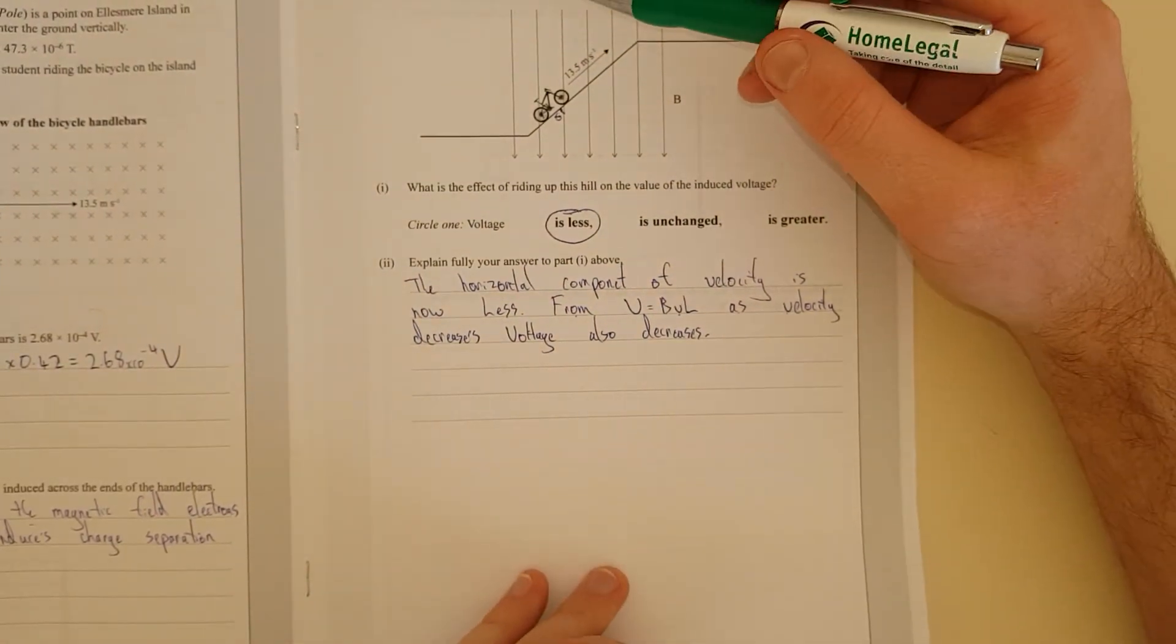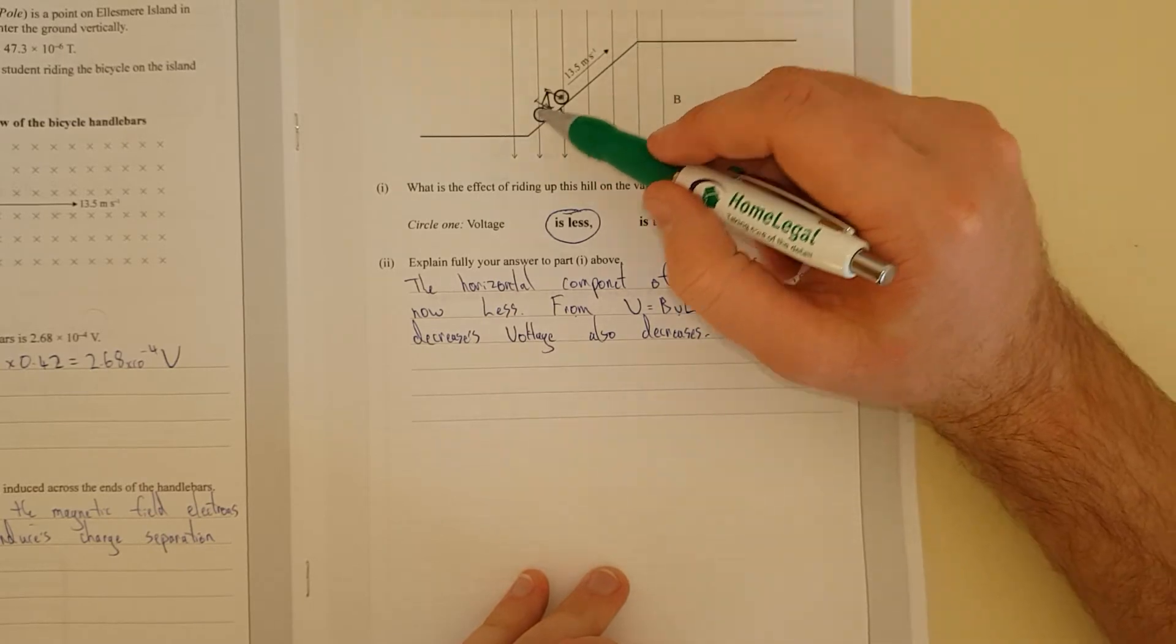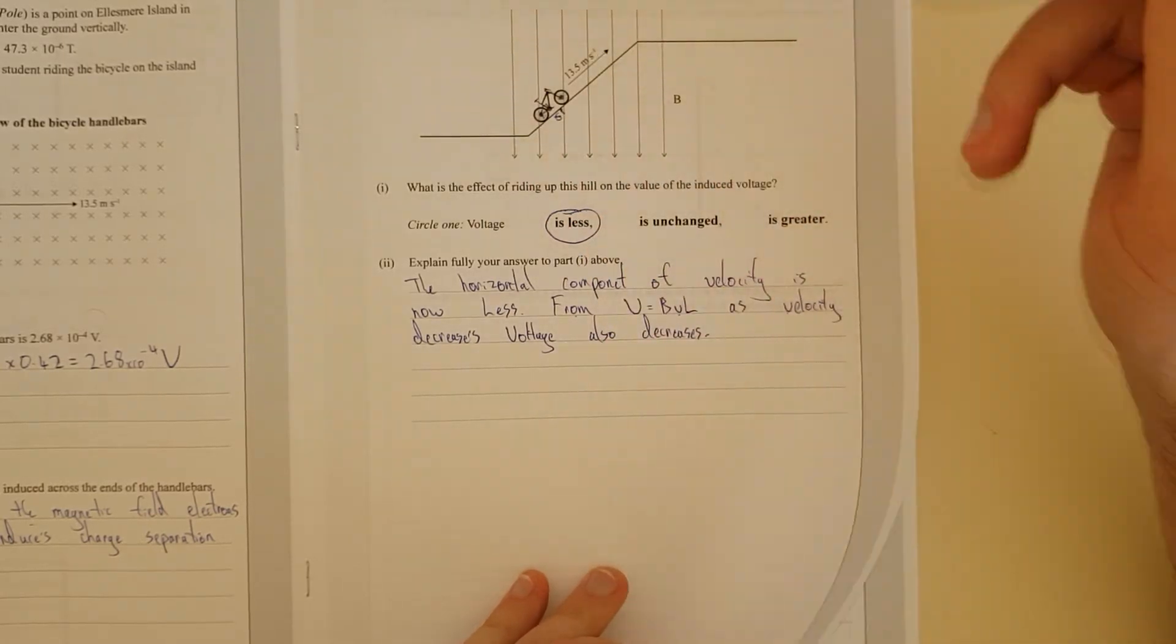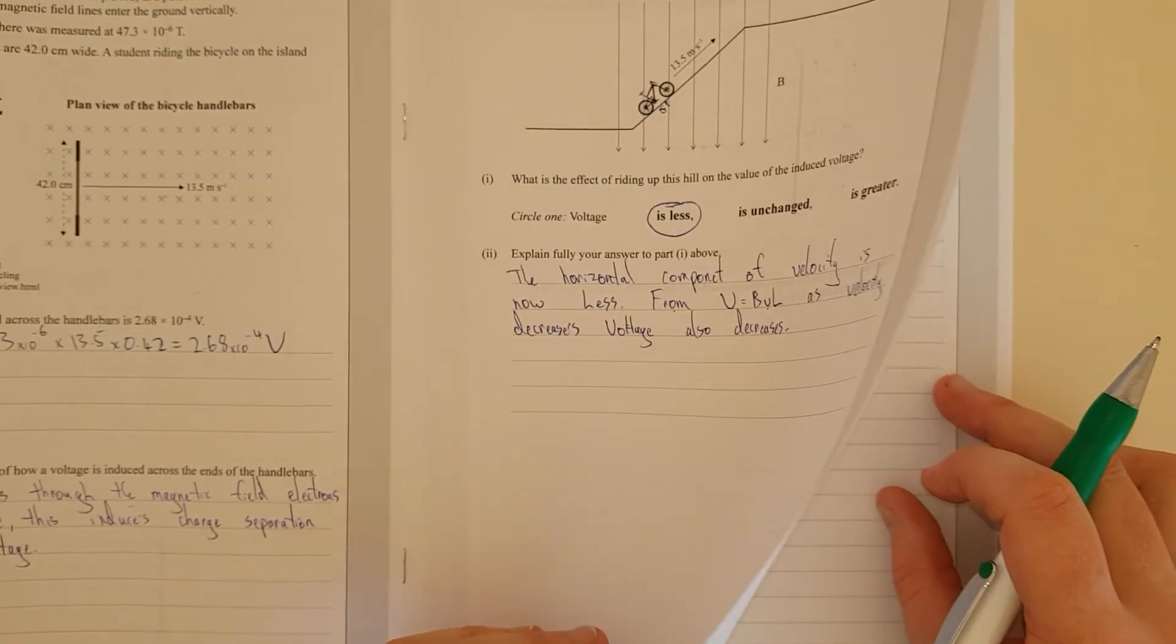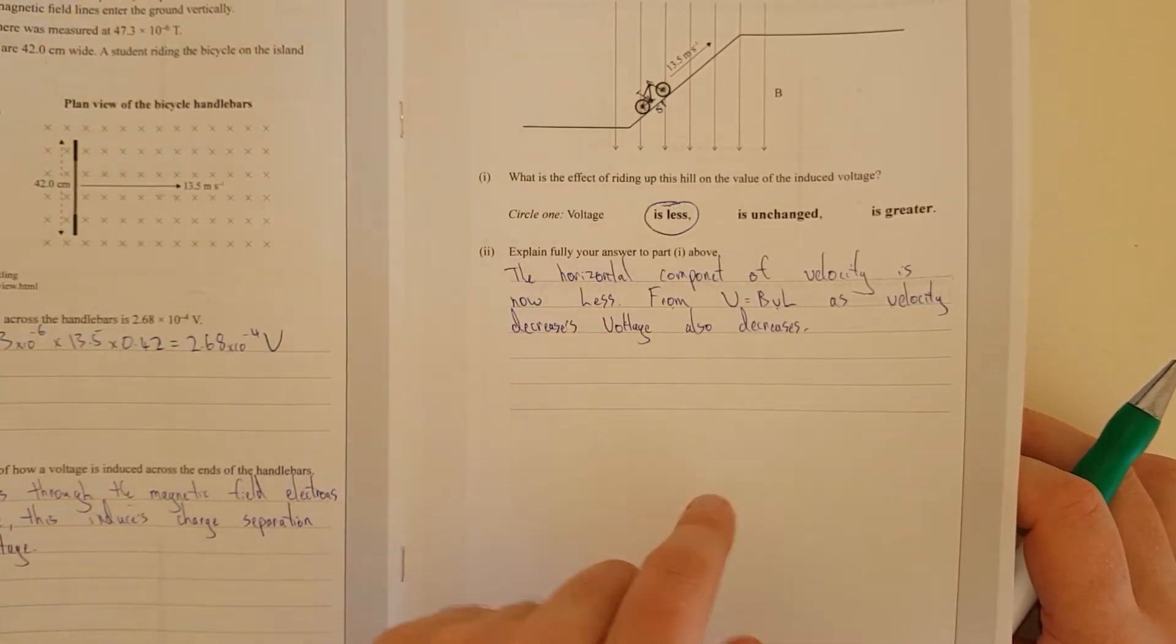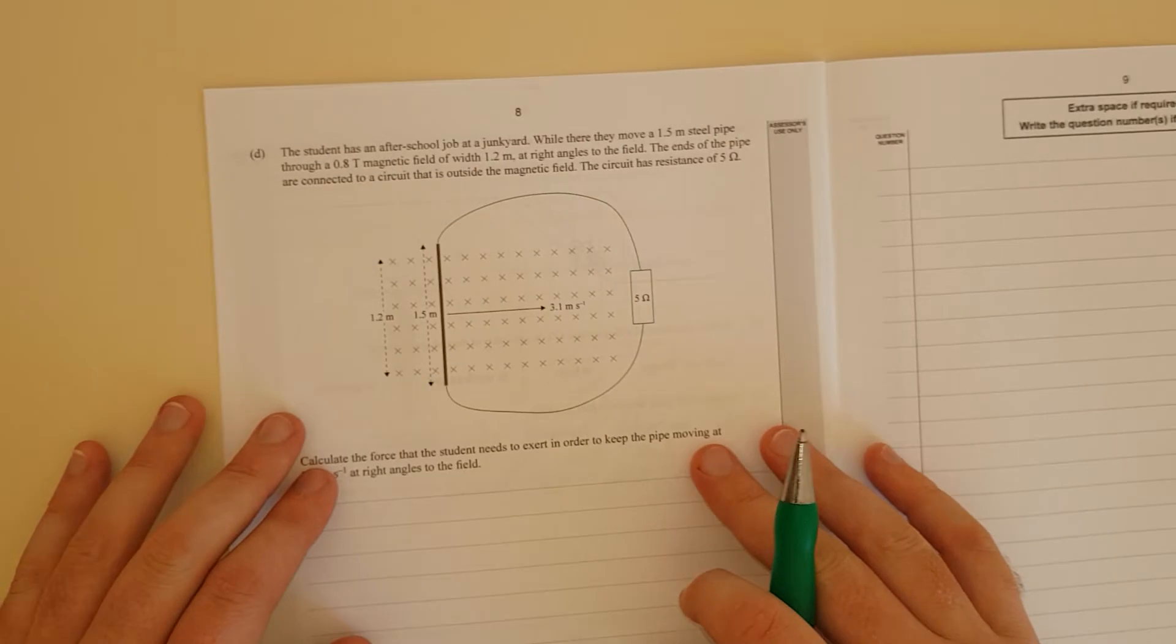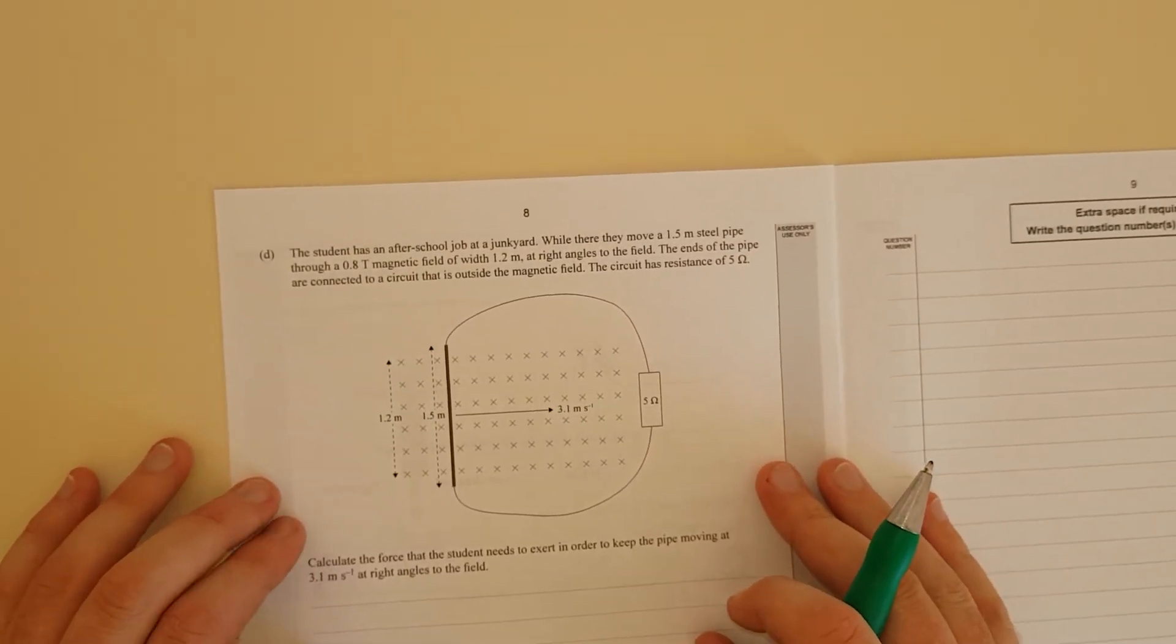You could have also said the whatever angle that is component of the magnetic field is now less. Because it's going to be cos theta. Hypotenuse cos theta. So there would be b cos theta, or sine. Either or.